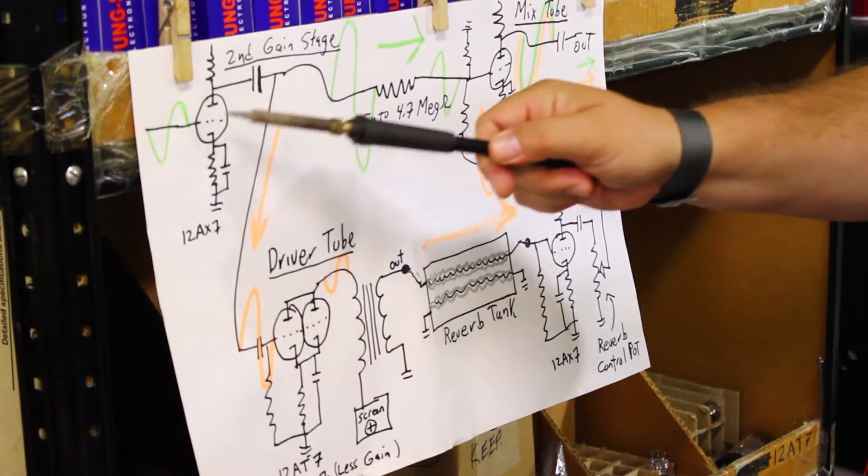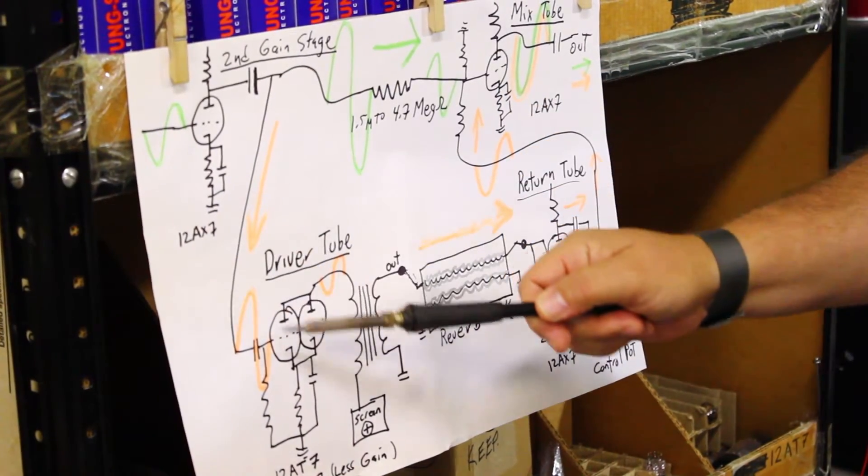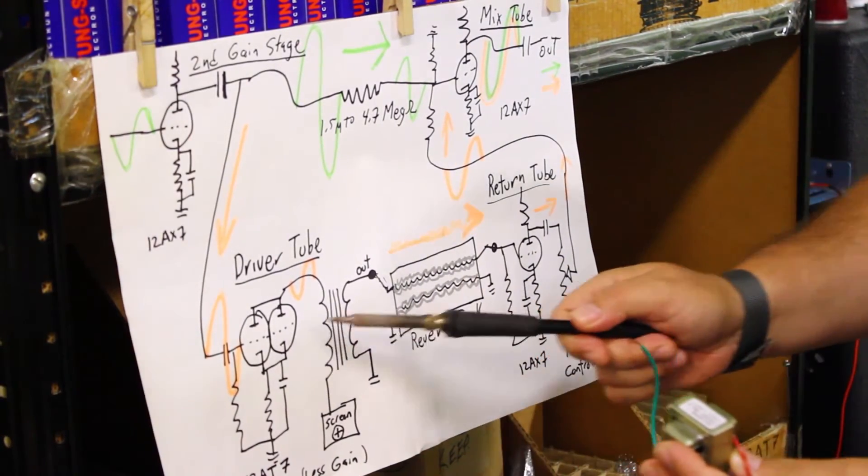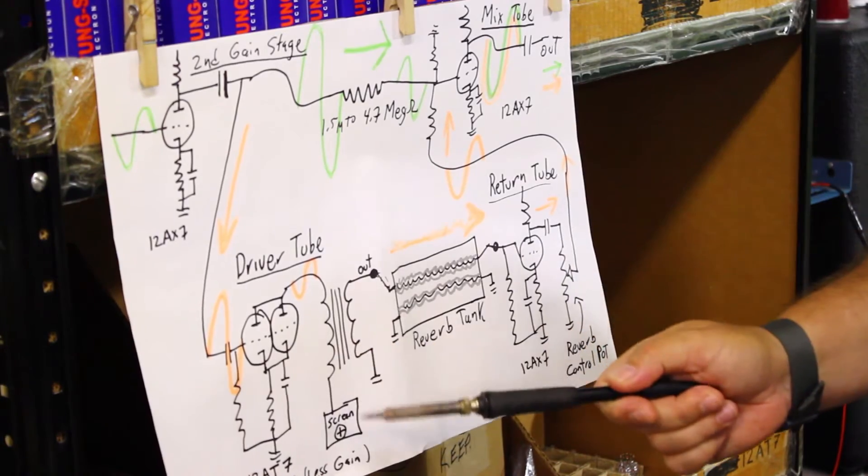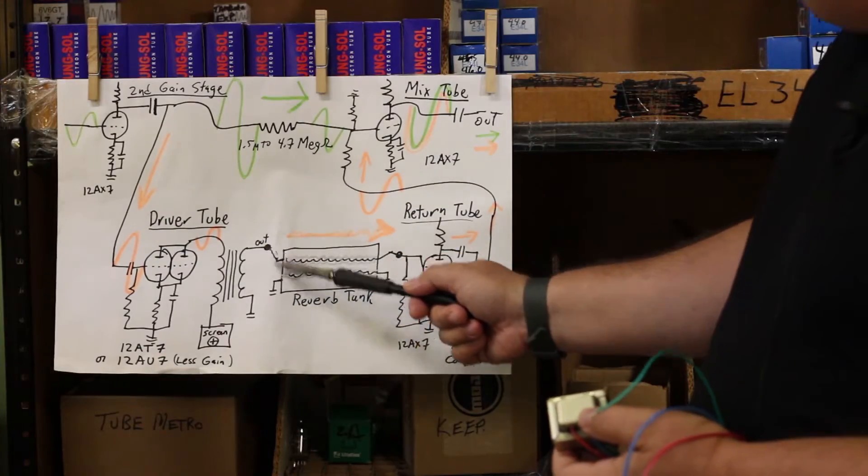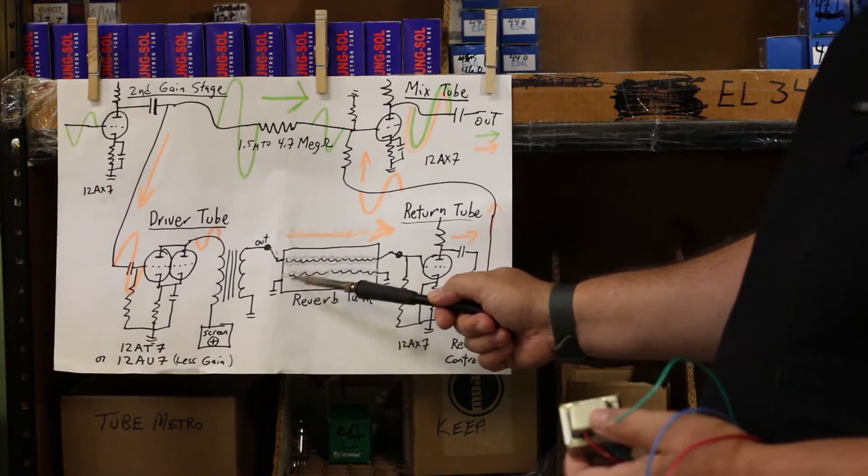So the signal from your guitar splits off, comes down to the 12AT7, drives this transformer, and that's an 8-ohm output, just like a speaker. But in this case, it goes to a reverb tank.